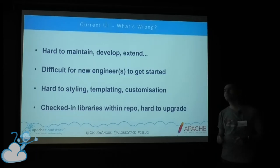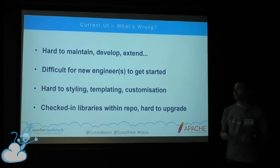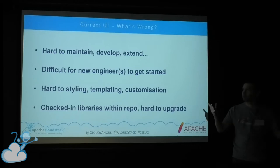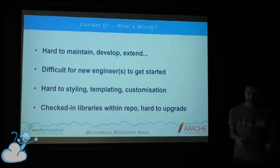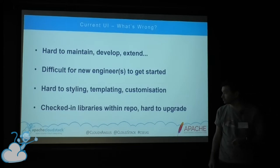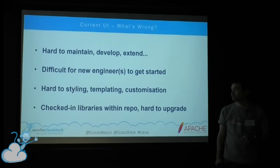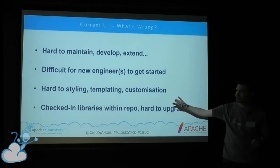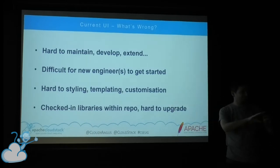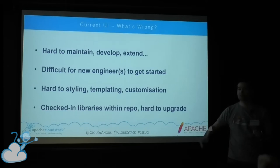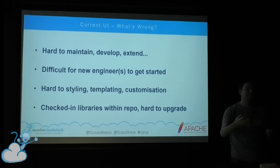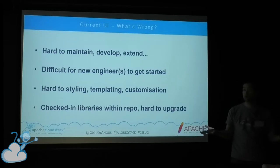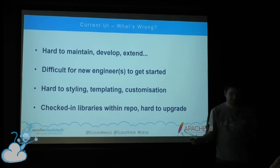It's also difficult for people to just get a handle on it — it scares them off. New people who want to contribute look at this UI and run a mile. When quoting how long a feature takes, we have to put in a ridiculously high number for the UI work because it's so pernickety. People end up saying 'can we just have the API instead?' And because the UI is hard-coded to CloudStack's release, you can't fix something in the UI and release it — you have to wait for the next CloudStack release.